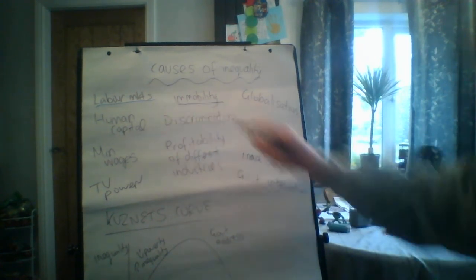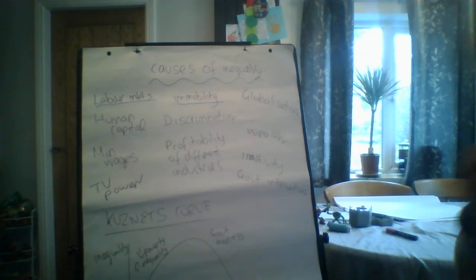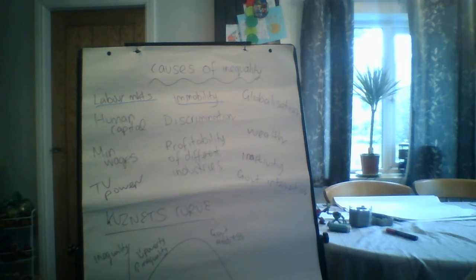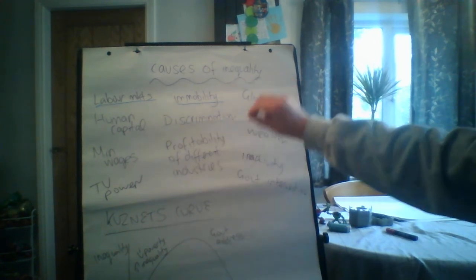Immobility is a really important cause of inequality. We have occupational and geographical immobility of labour. Occupationally, people lack the skills to accept certain jobs, making it harder to access well-paid work and leading to more inequality and poverty. Geographically, people can be stuck in areas of high unemployment and unable to relocate where jobs might be available, due to high house prices, high relocation costs, and high transport costs — creating pockets of deprivation around the economy.